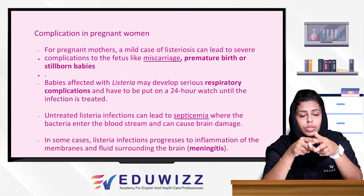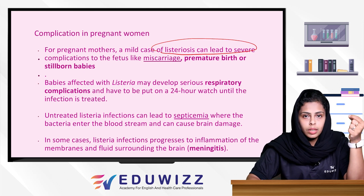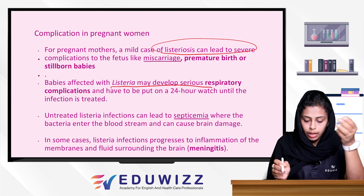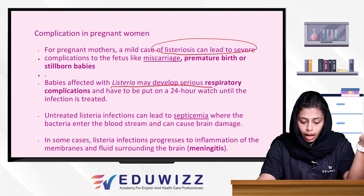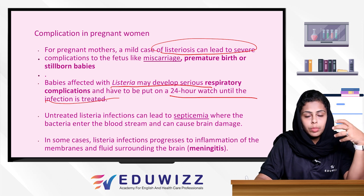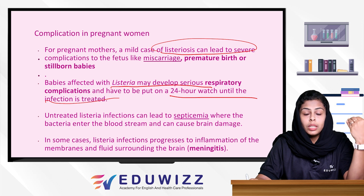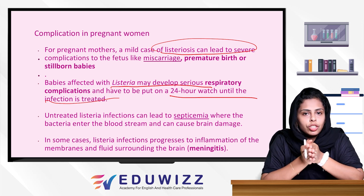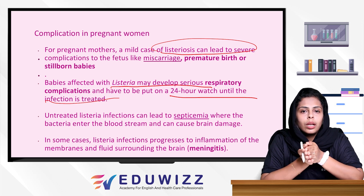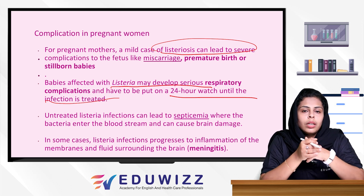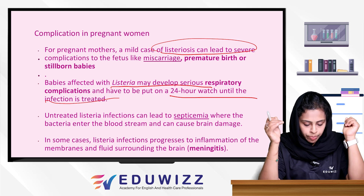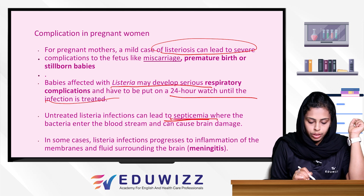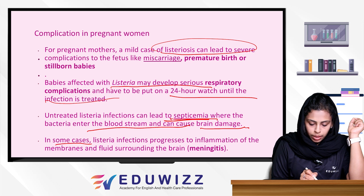Complications in pregnant women include miscarriage, premature birth, or stillborn babies. Babies affected with Listeria may develop serious respiratory complications and require 24-hour monitoring until the infection is treated. The main concern is meningitis. It is also possible to have intrauterine infection. Untreated Listeria infections can lead to septicemia where bacteria enter the bloodstream and can cause brain damage. Listeria Monocytogenes can cause inflammation of the meninges, meaning meningitis.